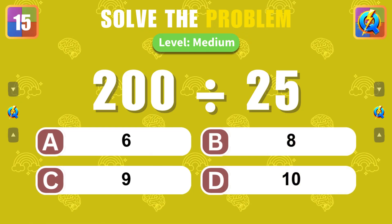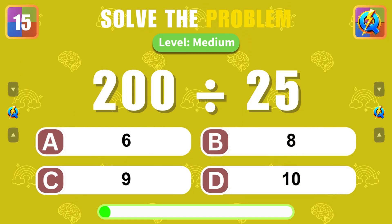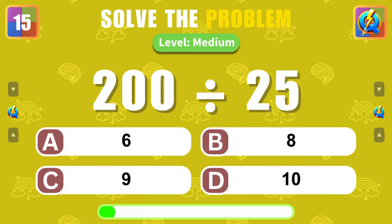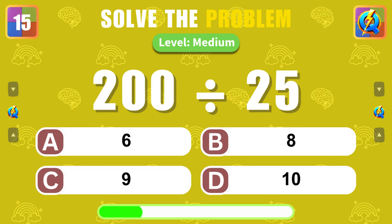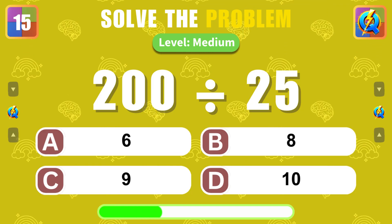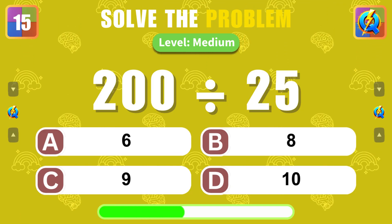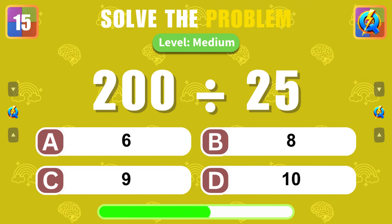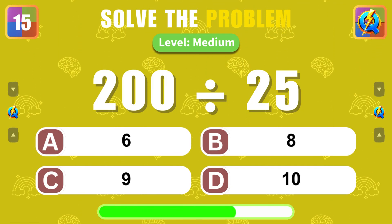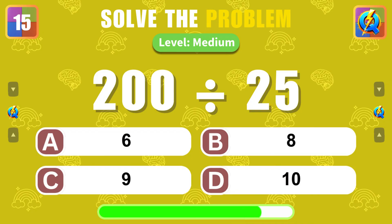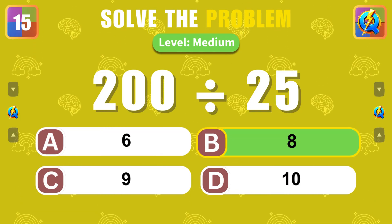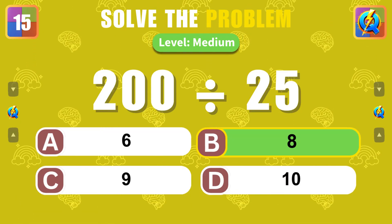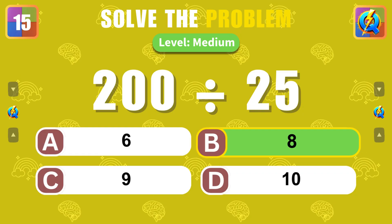What is the result of 200 divided by 25? The answer is 8.